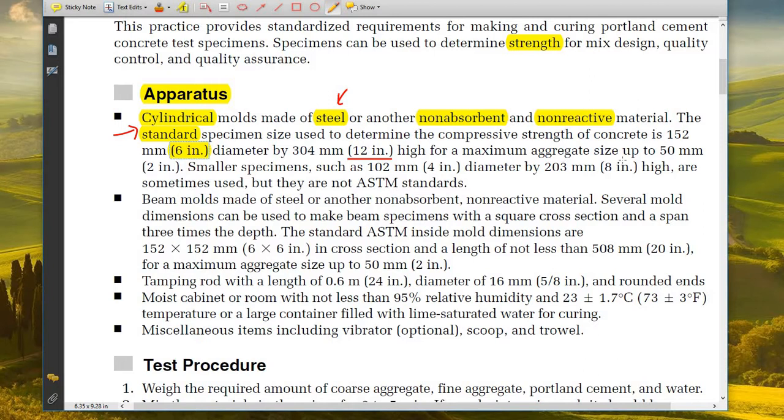This is for a maximum aggregate size up to 50 millimeters. Smaller specimens such as 4 inch by 8 inch high are sometimes used, but they are not ASTM standard. We have two different types of specimens: one is 6 by 12 inches and the other is non-standard, which is 4 by 8 inches. We are going to use 6 by 12 inches.